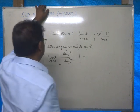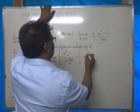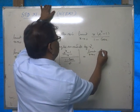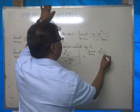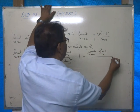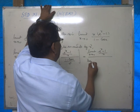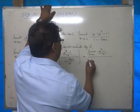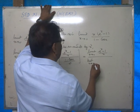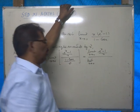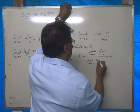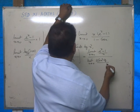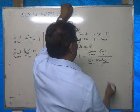That is equal to limit x tends to 0 of e raised to x minus 1 by x, divided by limit x tends to 0 of 1 minus cos x. Now, 1 minus cos x is equal to 2 sin squared x by 2, divided by x squared.